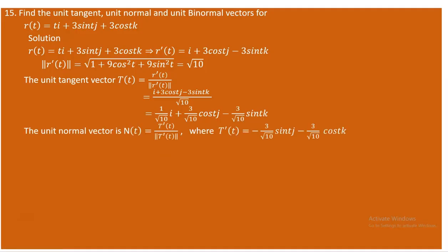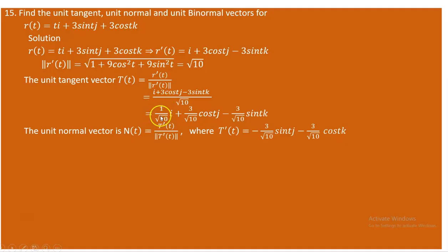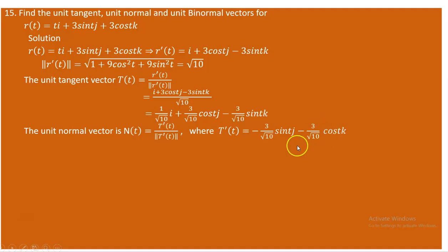The unit normal vector N(t) is orthogonal to the tangent vector and is determined by T'(t) / |T'(t)|. T'(t) is the derivative of the tangent vector just obtained. The x-component is constant so its derivative is zero. The y-component gives −(3/√10)sin(t)j, and the z-component gives −(3/√10)cos(t)k.